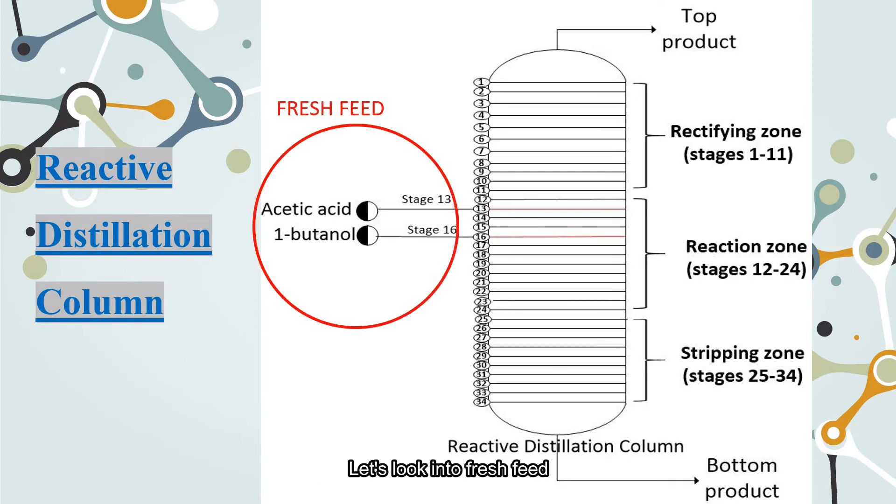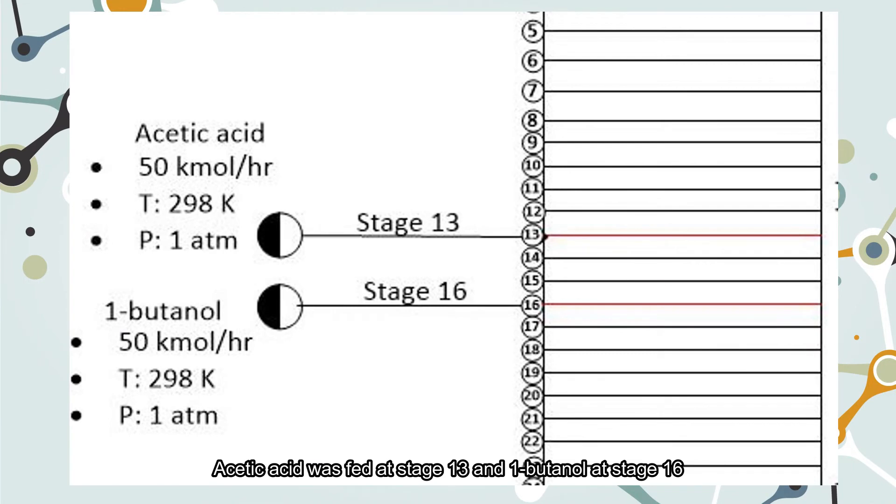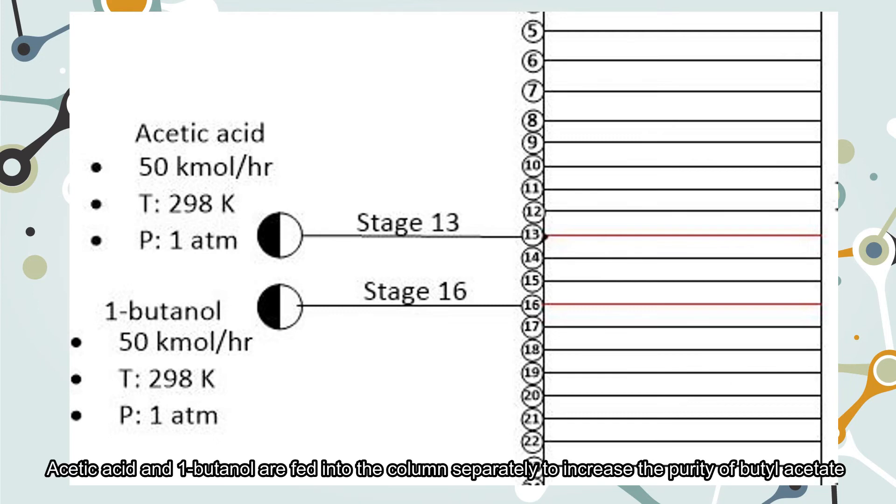Let's look into the fresh feed. Acetic acid was fed at stage 13 and 1-butanol at stage 16. Both acetic acid and 1-butanol are fed with the same operating condition which is at 50 kmol per hour, 298 Kelvin, and at 1 atmospheric pressure. Acetic acid and 1-butanol are fed into columns separately to increase the purity of butyl acetate.